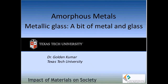This is the Impact of Materials on Society module, and the focus of this presentation is on a new type of metals called amorphous metals. They are also called metallic glass, which means the material has some properties of a metal and some properties of a glass. In the next few slides I will explain what is the meaning of a metallic glass.